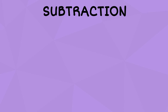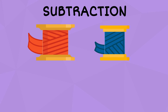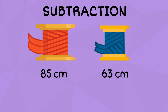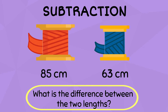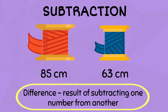Now let's practice subtraction using these two rolls of ribbon. The first roll is eighty-five centimeters long when it's all rolled out. The second one is sixty-three centimeters long when it's all rolled out. What is the difference between the length of the two rolls? Remember in math that the word difference means the result of subtracting one number from another number.